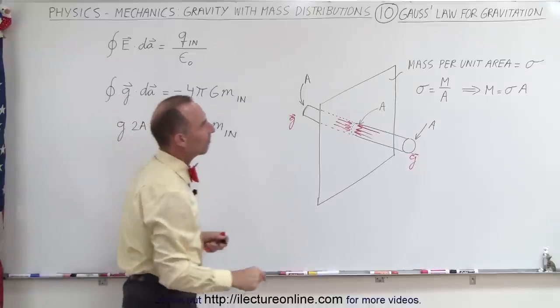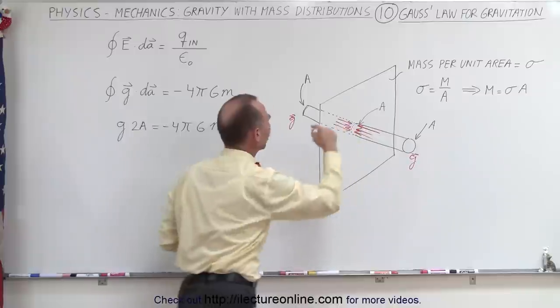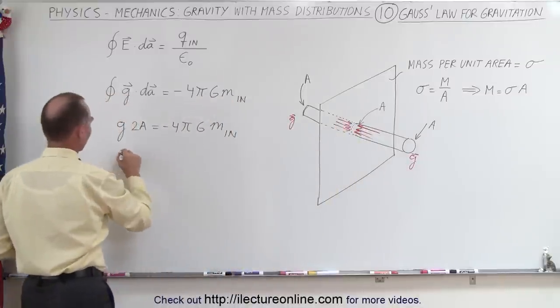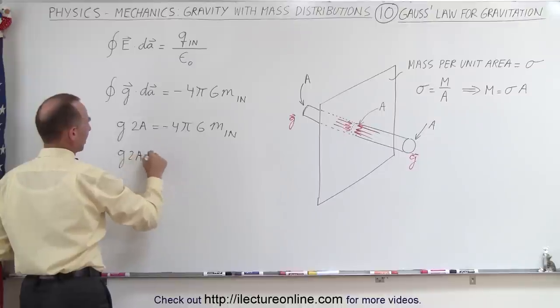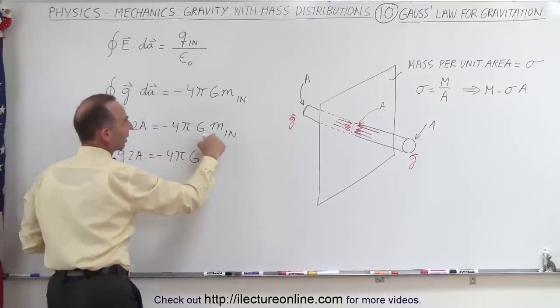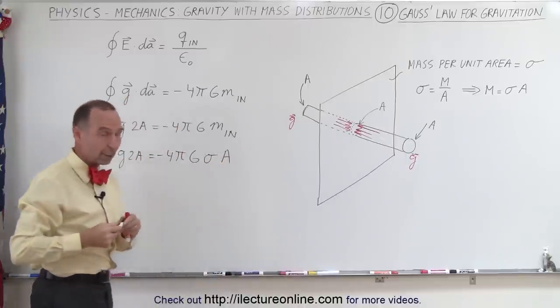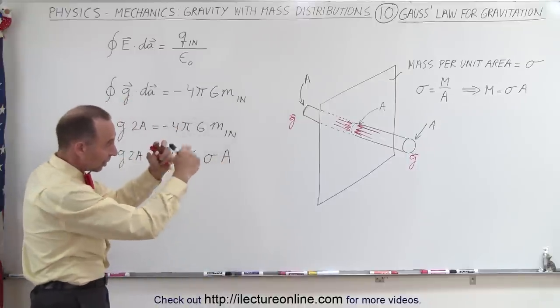Now the mass inside can be found by simply multiplying the density times the area of the cutout. So we have g times 2A equals minus 4π times G, and the mass inside will be the density times the area. We only count the area once, because it's that area cut out of the sheet.